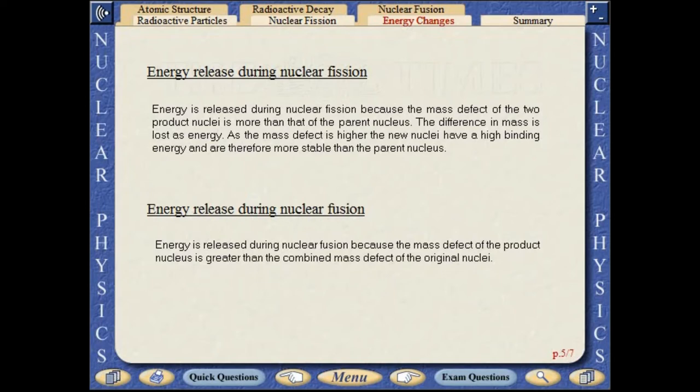Energy is released during nuclear fusion because the mass defect of the product nucleus is greater than the combined mass defect of the original nuclei.